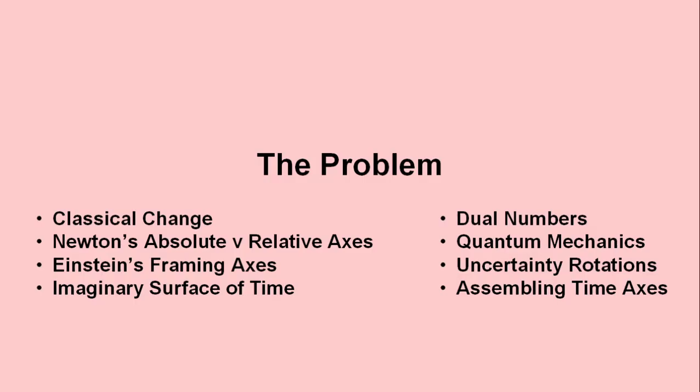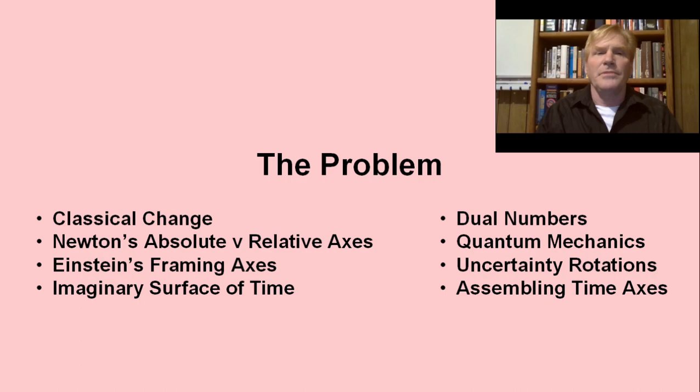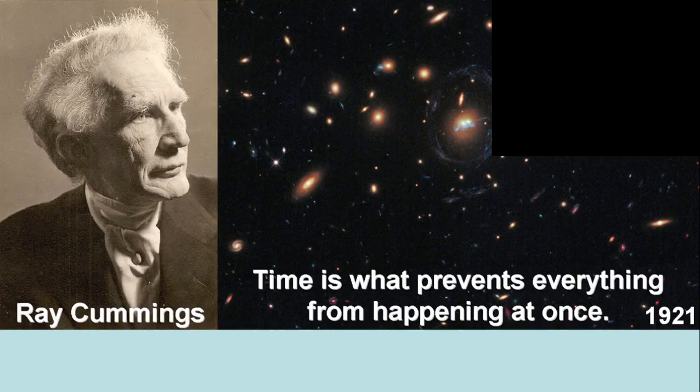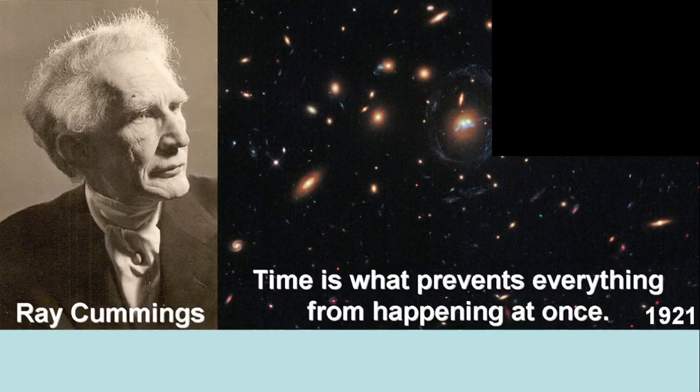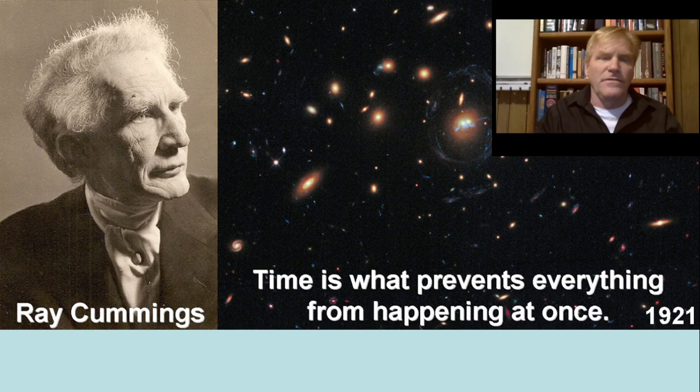Time is the object of study in physics. You know, every equation in physics has a time derivative. Time is a physically functional dimension, and understanding time helps us understand physics generally. In 1921, Cummings published his story, The Time Professor, in which the professor echoes a basic concept from relativity: time is what prevents everything from happening at once. Einstein first framed things locally in time, then moved them around in time, then proved it is functional with general relativity.